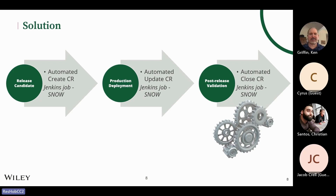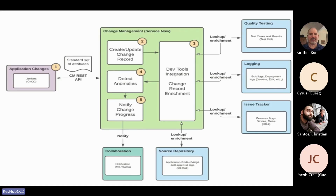The solution is simple: we automate the creation of the change request. We use a Jenkins job as an orchestration tool, which collects all the information, goes through the deployment process, and collects everything. At the end — and this is very important for anyone using ServiceNow — change requests are typically open but never closed. We don't have that problem anymore. We have A to Z everything going in there in a matter of seconds.